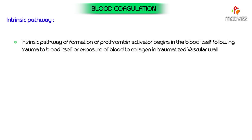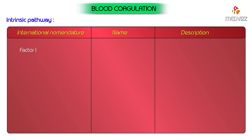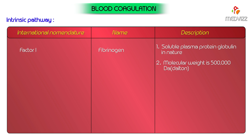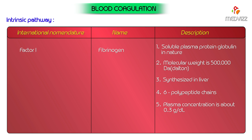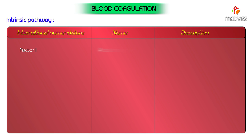Factor 1, known as fibrinogen, is a soluble plasma protein (globulin in nature) with a molecular weight of 500,000 daltons. It is synthesized in the liver, has six polypeptide chains, and its plasma concentration is about 0.3 grams per deciliter. It is converted into fibrin in the presence of the enzyme thrombin. Factor 2, prothrombin, is a plasma protein and the inactive precursor of the enzyme thrombin, with a molecular weight of about 69,000 daltons.